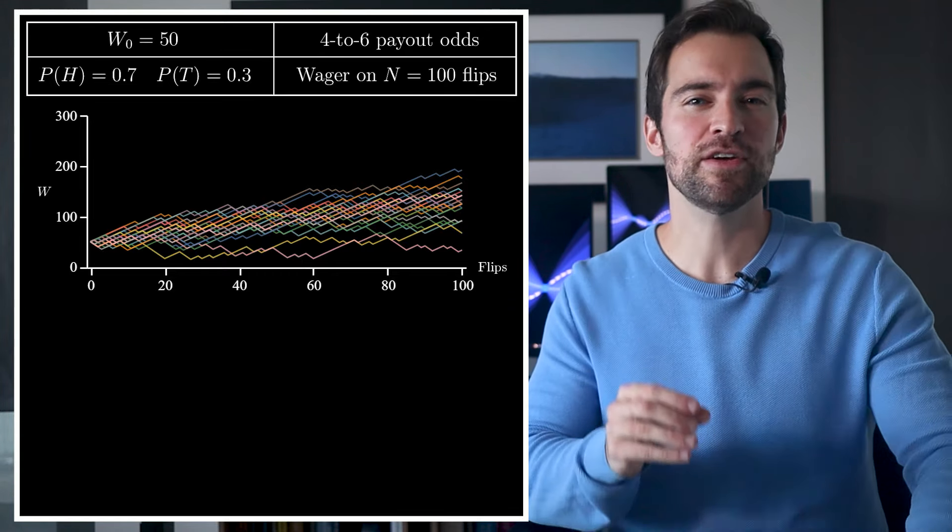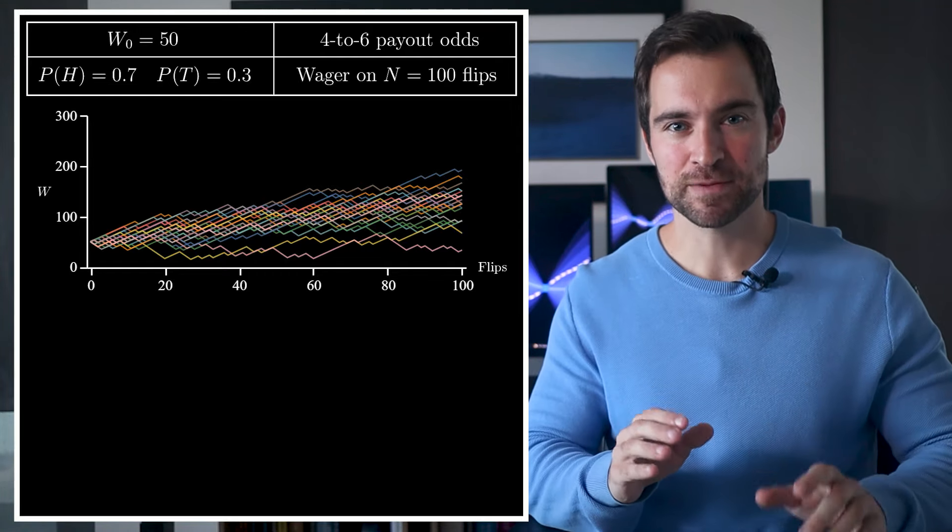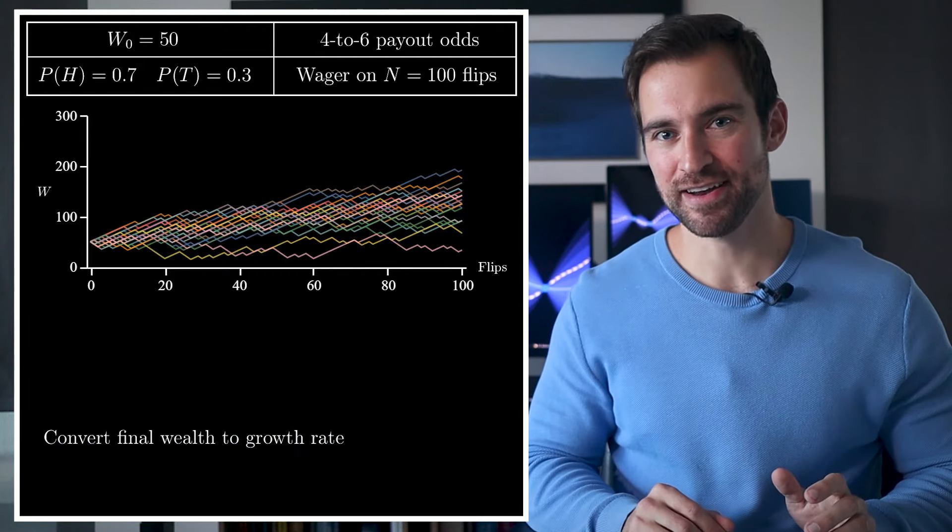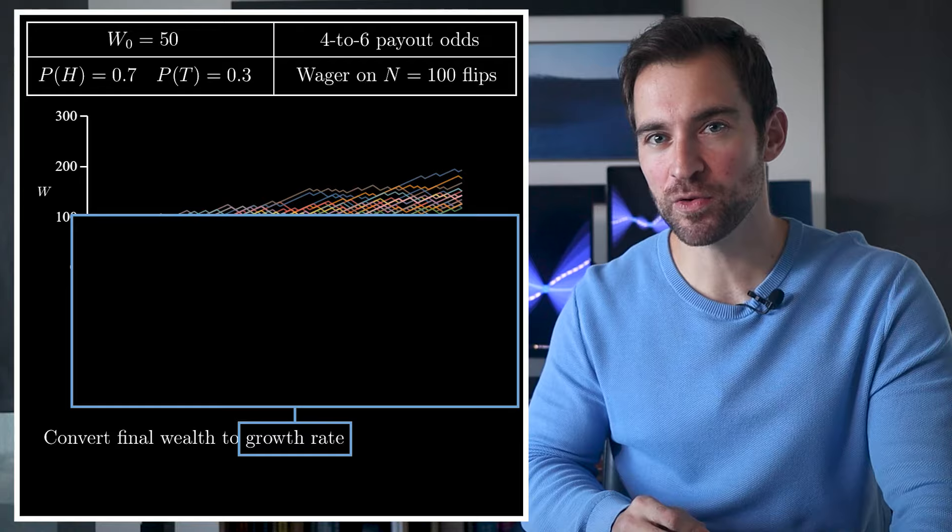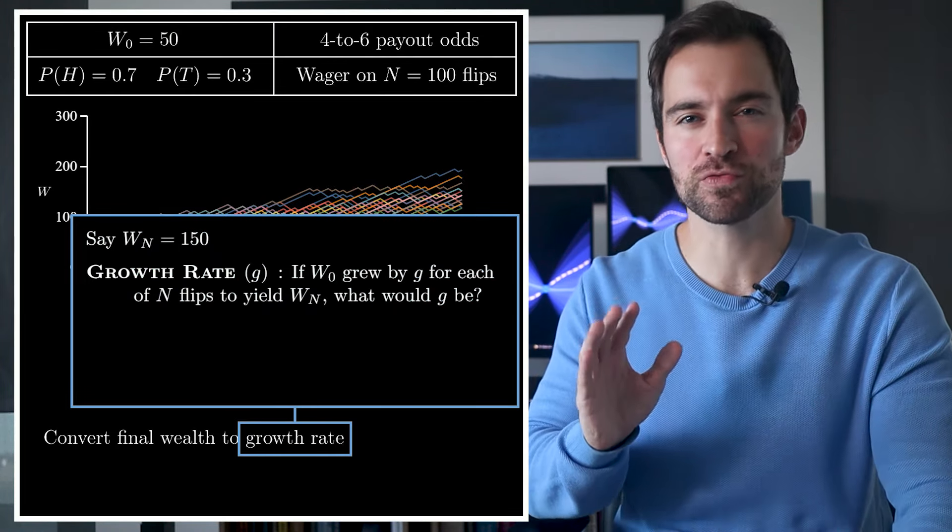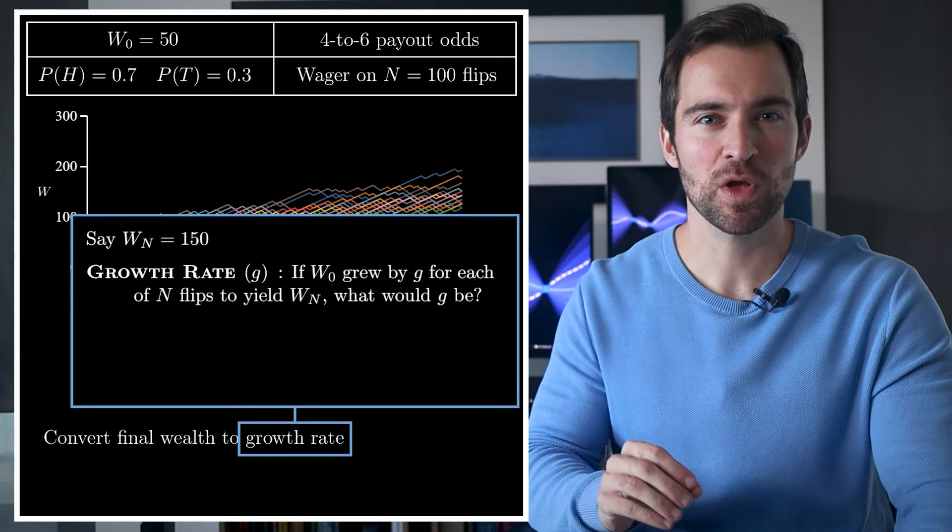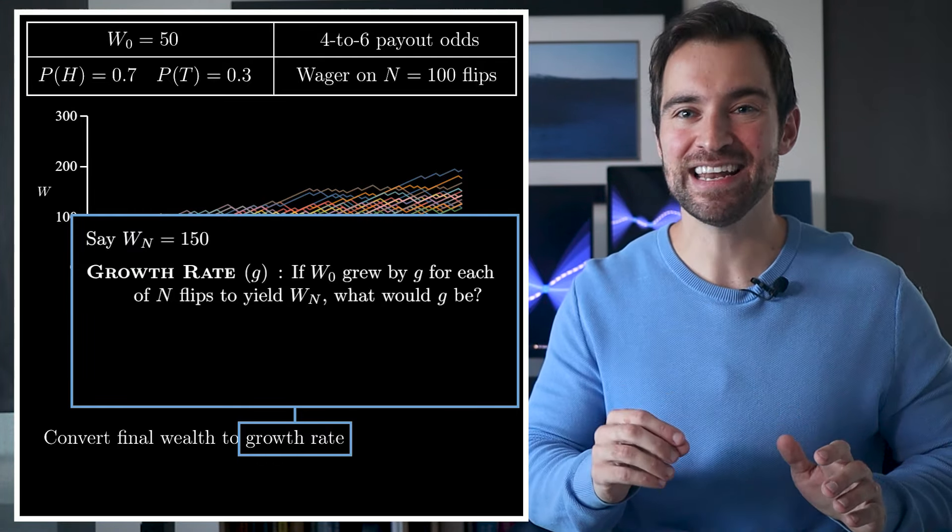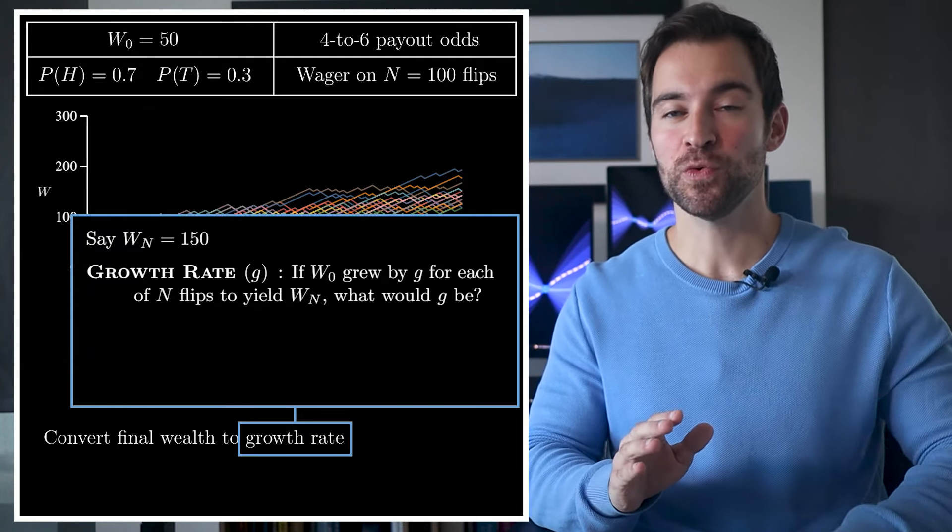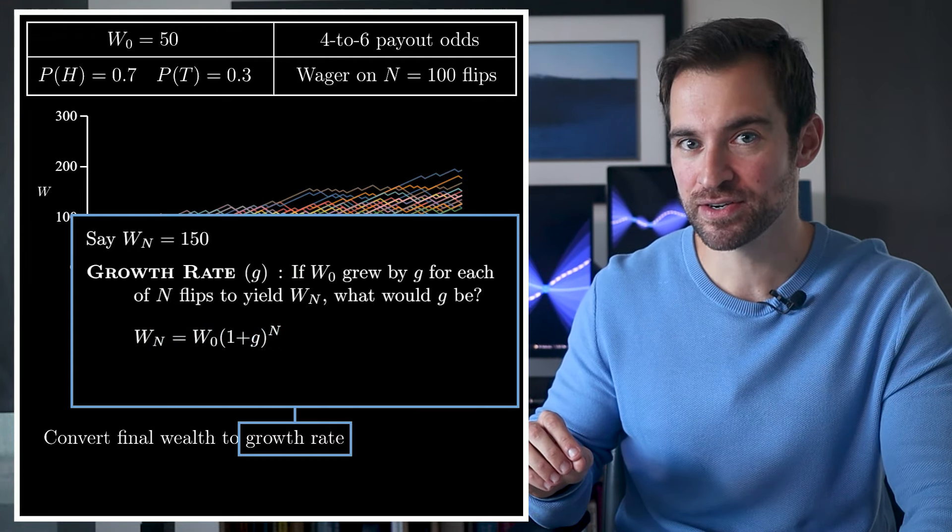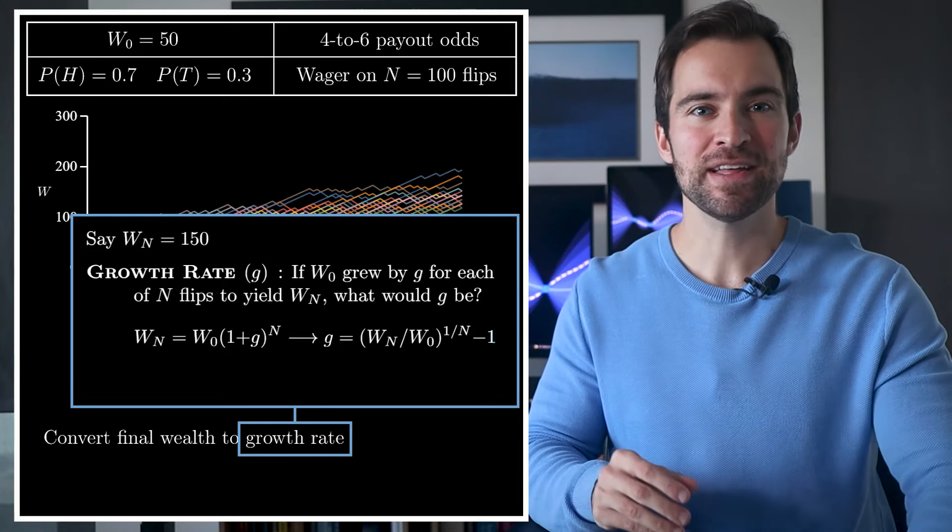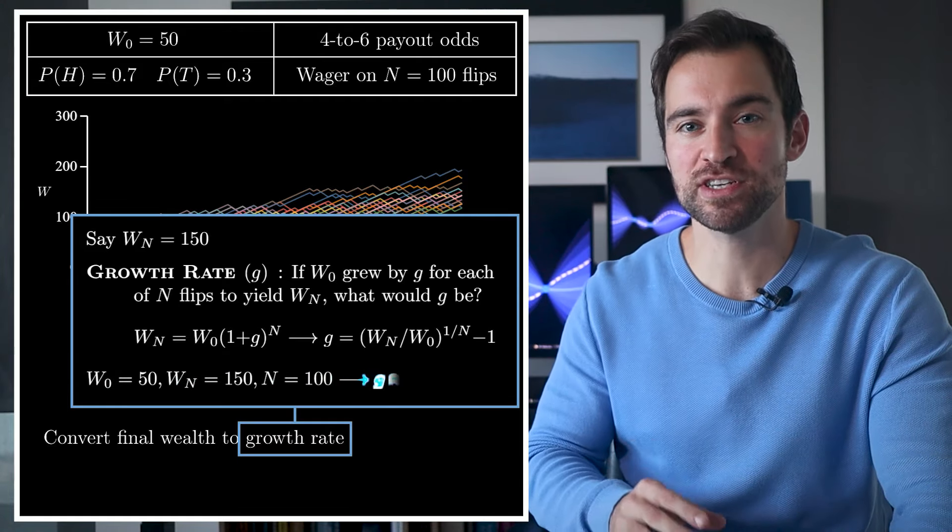But for the Kelly Criterion, there is a specific metric in mind. That is, for each possible final wealth, we ask, what growth rate does it imply? As an example, let's say one possible final wealth is $150. Then we ask the question, if our wealth grew by the same percent on each flip, what would that percent be that yields $150 after 100 flips? Well, we can answer that by using this equation, which we can invert to give us the growth rate. It turns out this tells us the growth rate is about 1.1% per flip.